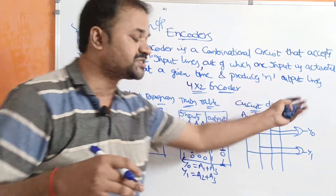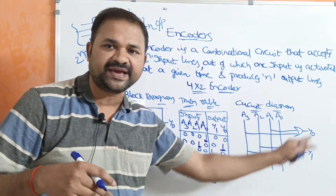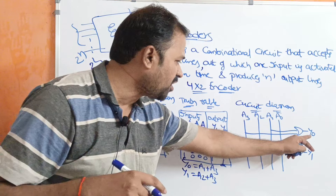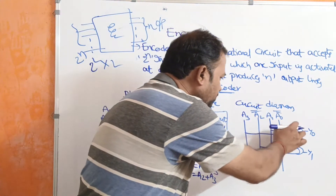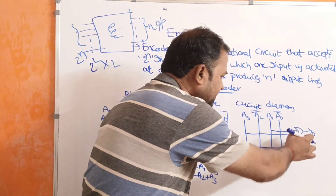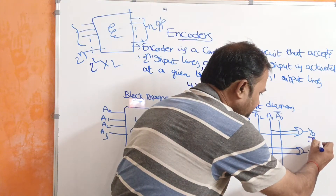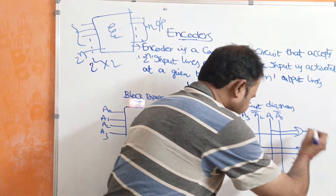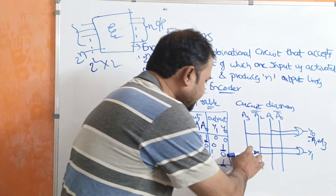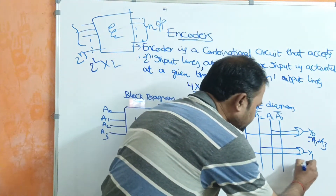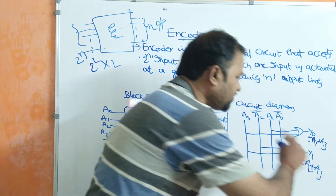Now let us see the logical circuit diagram. We require four input lines: A3, A2, A1, and A0. For Y0, the formula is A1 + A3, so we take the A1 and A3 input lines and perform an OR operation to get Y0. For Y1, the formula is A2 + A3, so we take the A2 and A3 input lines and perform an OR operation to get Y1.